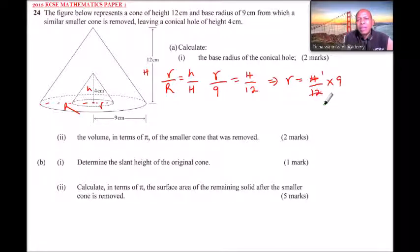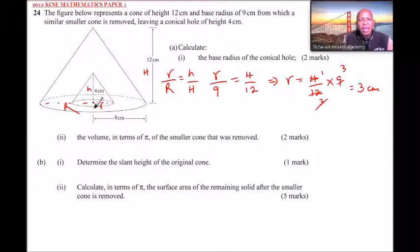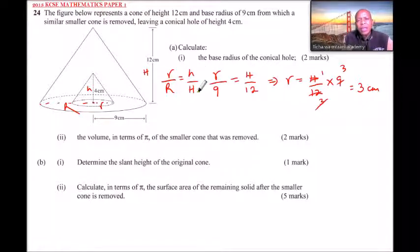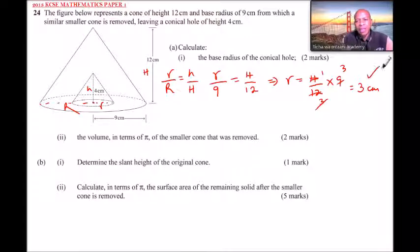Simplifying: 4 divided by 12 gives 1 over 3, and 1 over 3 multiplied by 9 gives 3. So the radius of the small cone is 3 centimeters. Note that you can also start with capital R over small r equaling capital H over small h — as long as you arrange corresponding sides of the big and small cone properly, it gives the same constant.